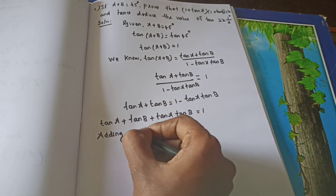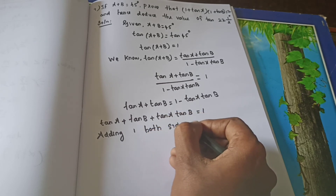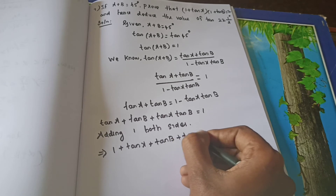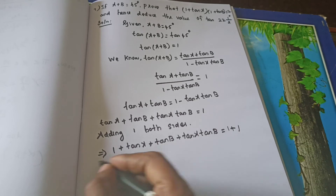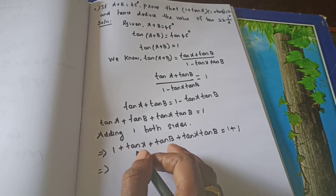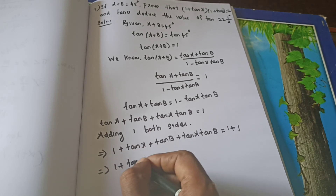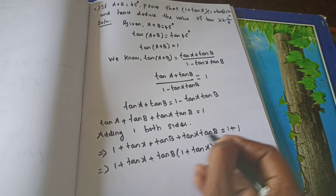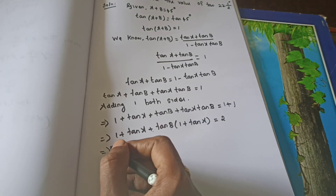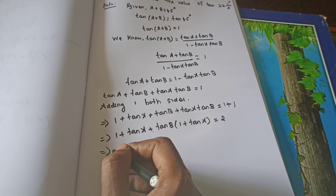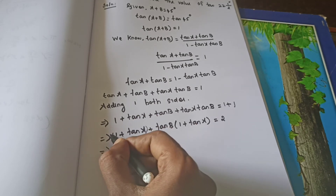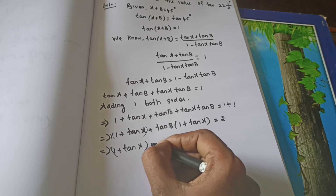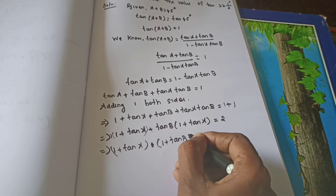Now adding 1 on both sides: 1 plus tan A plus tan B plus tan A tan B equals 1 plus 1, which equals 2. Now we are going to factor the left side. We can write it as: 1 plus tan A is a common factor. Taking tan B common from the remaining terms: (1 + tan A)(1 + tan B) equals 2. Hence proved.